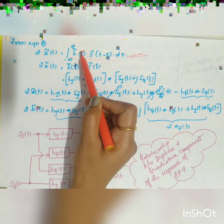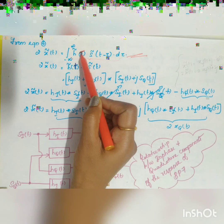Step 6: compute the desired output signal x(t) from the complex envelope: x(t) = Re[x̃(t) · e^(j2πfct)]. These are the two different procedures — time domain and frequency domain — to find the complex representation of bandpass signals and systems.